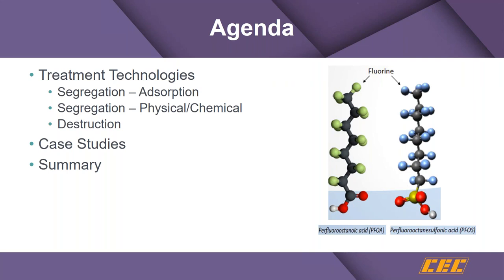The longer chain PFAS are easier to remove than short chain, and the longer chain are also considered more toxic than the short chain. In many technologies, some of the long chain may be converted to short chain PFAS. The head can be either carboxylate or sulfonate, and in many of these technologies the sulfonates are more easily removed or destroyed than the carboxylates.